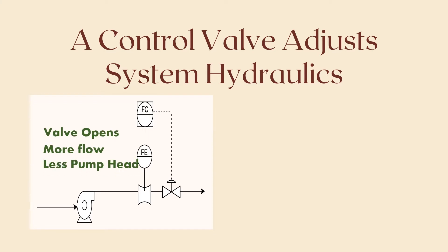If there is no control valve, the pump will face the minimum resistance, which means pumping much more flow than expected, and may even cause the pump to work at the end of the curve, which is not a good operating condition in many cases. I have made a dedicated course for pump hydraulics where it plots the pump performance curve against the system curve, and shows how the control valve on the discharge affects the pump operating point. You can check it out in the description.